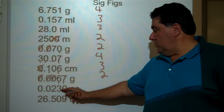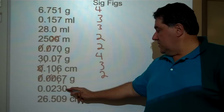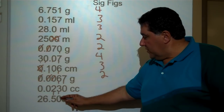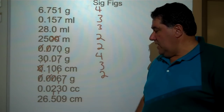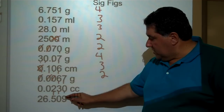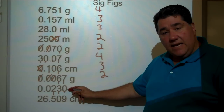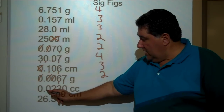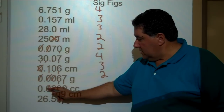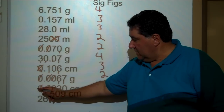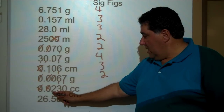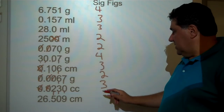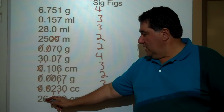0.0230 cc's. The two and the three are significant. The trailing zero, by rule number two, comes at the end after a decimal point, so it is significant. The leading zeros are not significant — they are not in between significant figures. There are only three sig figs.